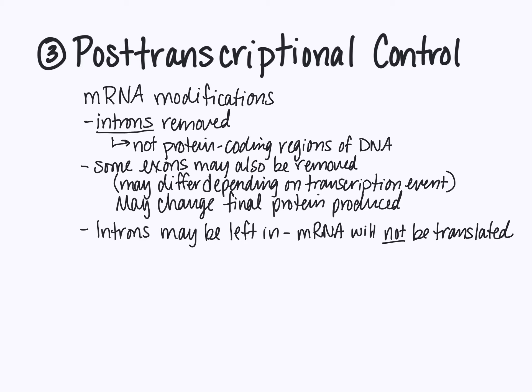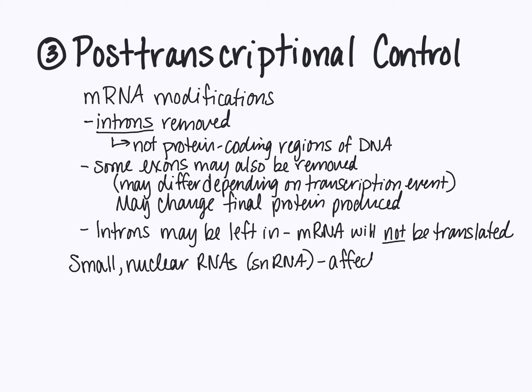There are additional molecules of RNA called small nuclear RNAs, abbreviated as snRNA. These snRNAs affect how the pre-mRNA is being spliced — they can affect whether these splicing events are occurring and how they are occurring. During post-transcriptional control, control can also be exerted over how quickly the mRNA leaves the nucleus and goes into the cytoplasm.